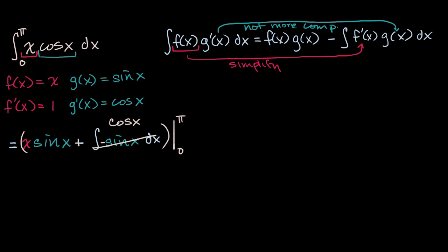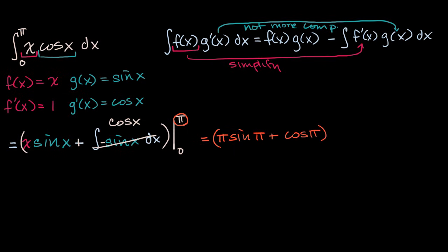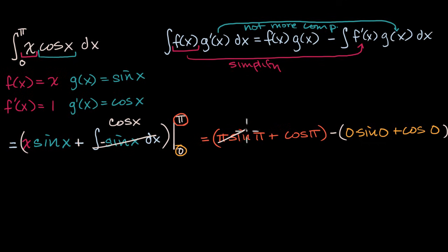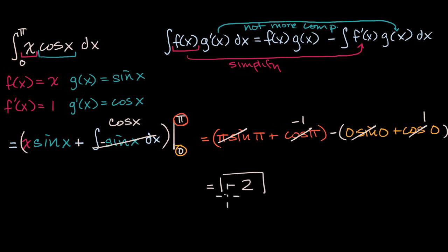Now we just have to evaluate at the endpoints. Evaluating at pi: pi times sine of pi plus cosine of pi. Then subtract the whole thing evaluated at zero: zero times sine of zero plus cosine of zero. Sine of pi is zero, so that term cancels out. Cosine of pi is negative one. The zero times sine of zero term is zero. And cosine of zero is one. So you have negative one minus one, which gives us negative two. Using integration by parts, we were able to evaluate this definite integral.